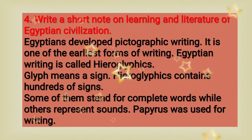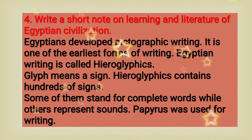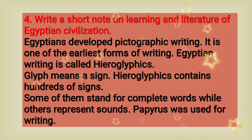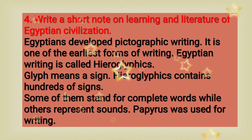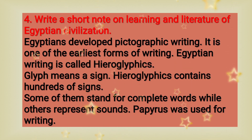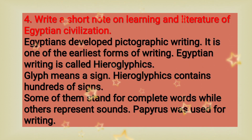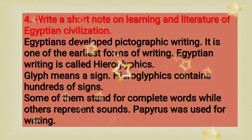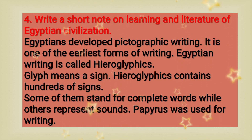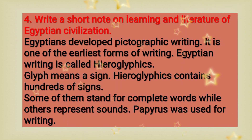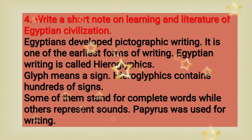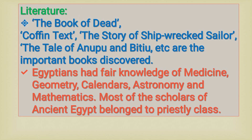Question number 4: Write a short note on learning and literature of Egyptian civilization. Egyptians developed pictographic writing, one of the earliest forms of writing. Egyptian writing is called hieroglyphics. 'Glyph' means a sign. Hieroglyphics contains hundreds of signs — some stand for complete words while others represent sounds. Papyrus was used for writing.